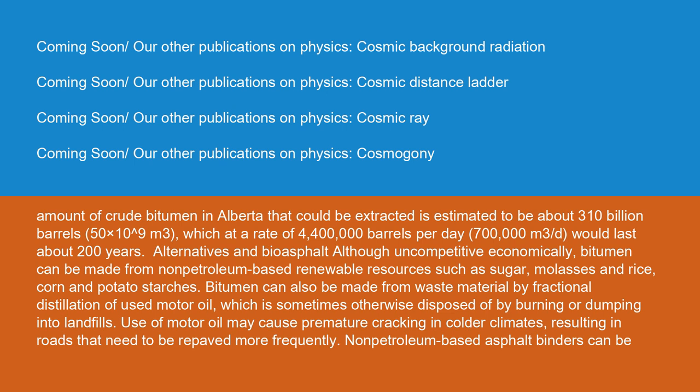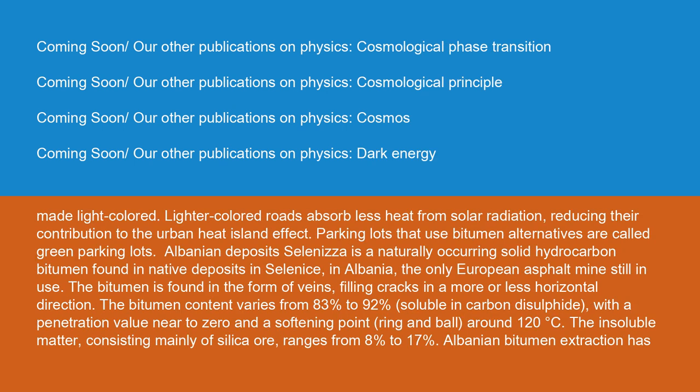Although uncompetitive economically, bitumen can be made from non-petroleum-based renewable resources such as sugar, molasses, and rice, corn, and potato starches. Bitumen can also be made from waste material by fractional distillation of used motor oil, which is sometimes otherwise disposed of by burning or dumping into landfills. Use of motor oil may cause premature cracking in colder climates, resulting in roads that need to be repaved more frequently. Non-petroleum-based asphalt binders can be made light-colored — lighter-colored roads absorb less heat from solar radiation, reducing their contribution to the urban heat island effect. Parking lots that use bitumen alternatives are called green parking lots.